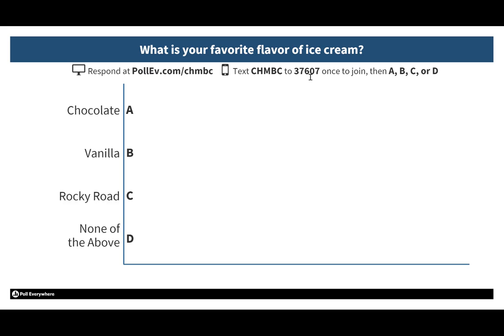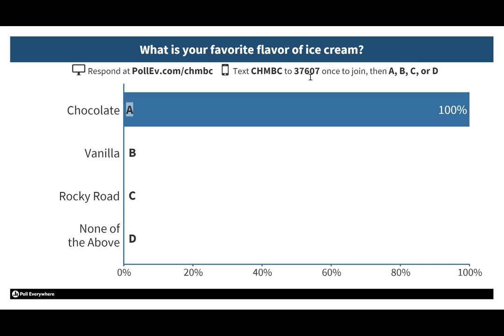After sending it, I get a response that I've joined, and once I've joined the Poll Everywhere text messaging service, I can then just text A on my cell phone, and within a couple of seconds it pops up on the PowerPoint slide that I've chosen A. And there it is — the answer is selected and it pops up fairly quickly.